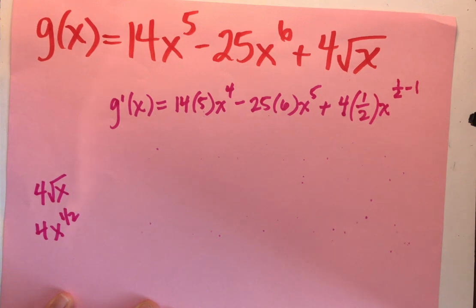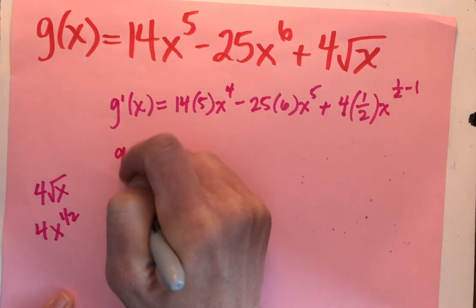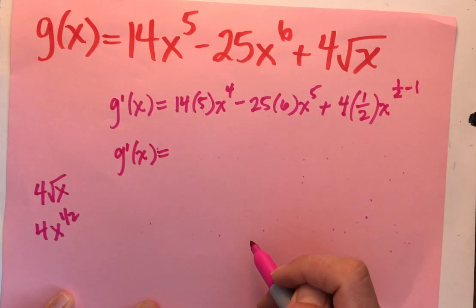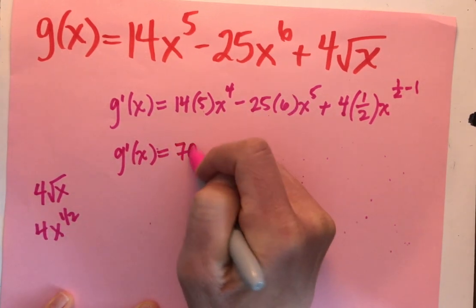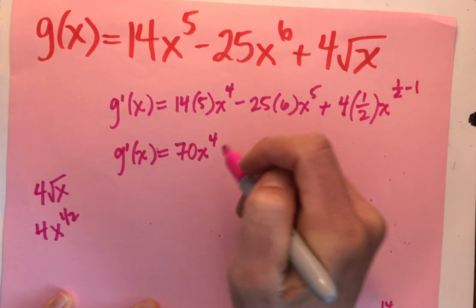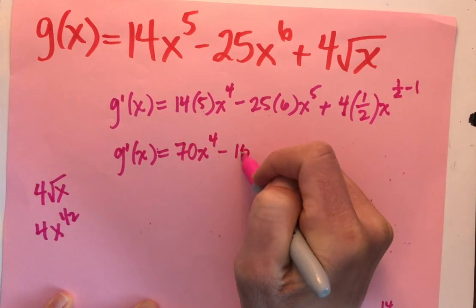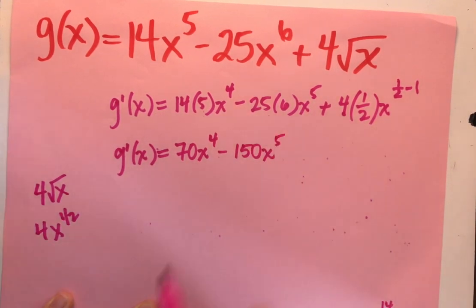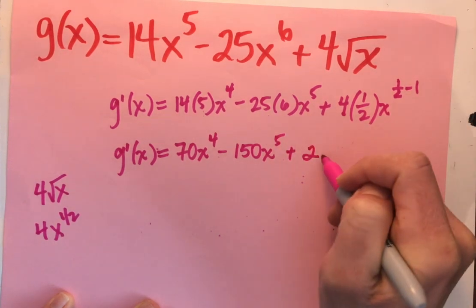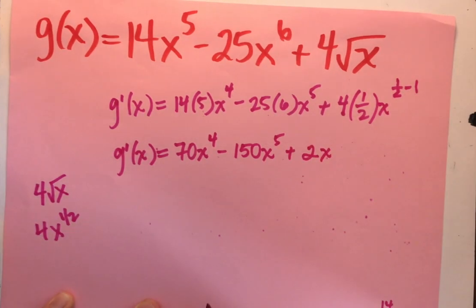So this is a lot going on, so let's clean it up. g prime of x, 14 times 5, that's going to give me 70 x to the 4th, is that right? 14 times 5, yep. Minus 150 x to the 5th plus 4 times the 1 half, that's 2 x to the 1 half minus 1, negative 1 half power.